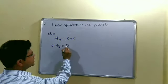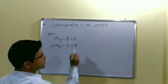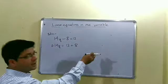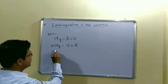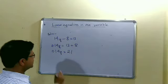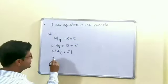All the variables will be on this side, numbers on the other side. So this -8, on the other side it will be +8. As it is known to us, minus on the other side becomes plus. So 14y = 13 + 8. If we add it, it is 21. Now with y, 14 is multiplied.